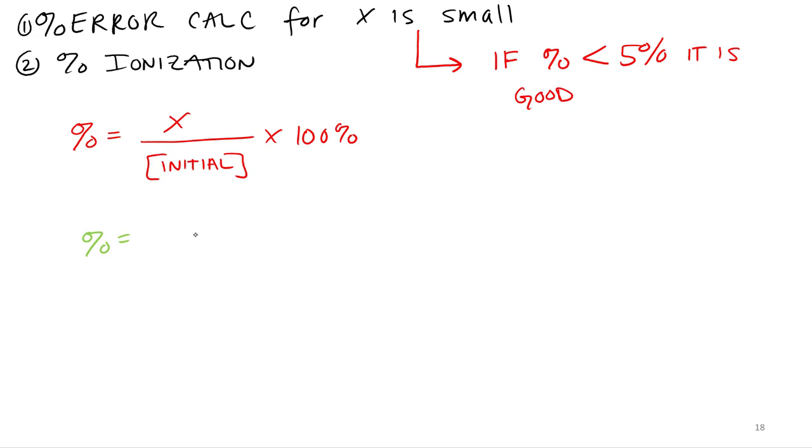So our percentage is what? 9.6 times 10 to the negative third, all over 0.200, times 100%.